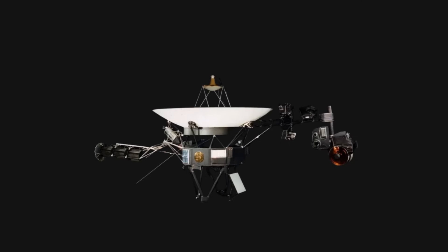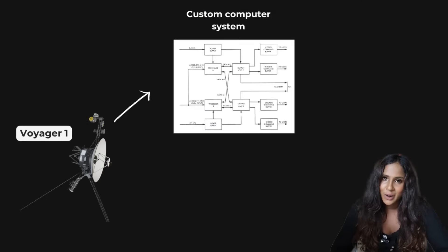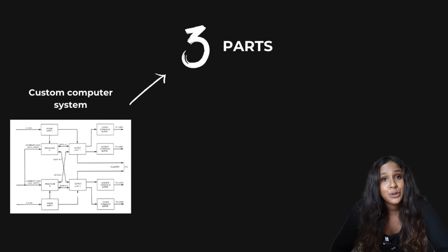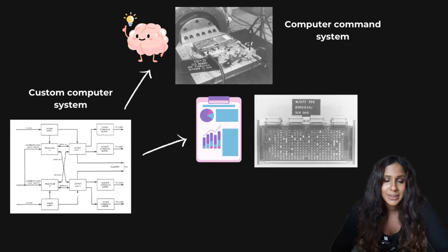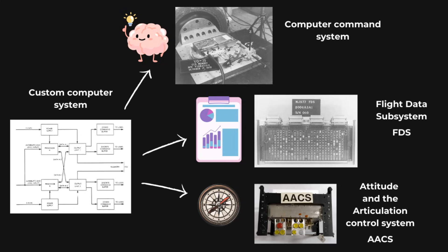Now for the good part, the computer system. Voyager 1 runs on a custom-built computer system that is split into three main parts. You get the brain, which is the computer command system or the CCS. You get the data manager, which is the flight data subsystem. And you get the navigator, which is the attitude and the articulation control system or the AACS.